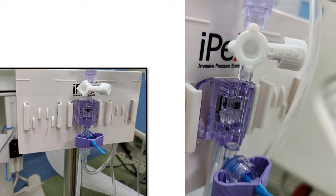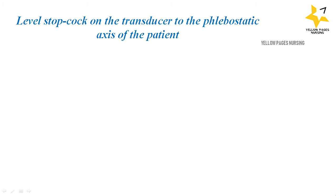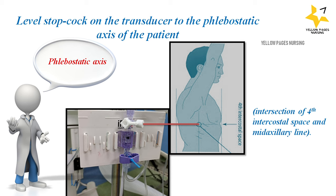As shown in the picture, a transducer holder is fixed on the IV stand and the transducer is fixed on the transducer holder. The upper part connects to the central line port with the help of a PM line, and the lower part connects to the pressurized saline bag, and the stopcock is off to the atmosphere. To level the stopcock: level the stopcock on the transducer to the phlebostatic axis of the patient. The phlebostatic axis is the intersection of the 4th intercostal space and the mid-axillary line. Place the patient flat in a supine position if possible; alternatively, measurements can be taken in a semi-recumbent position. The position should remain the same for each measurement to ensure an accurate, comparable result.